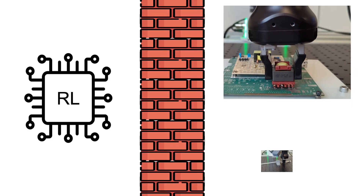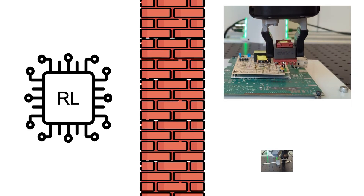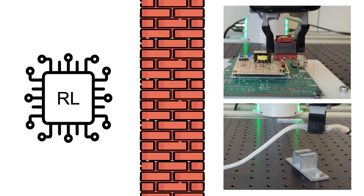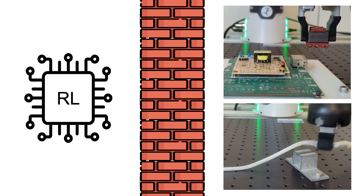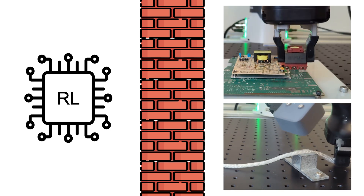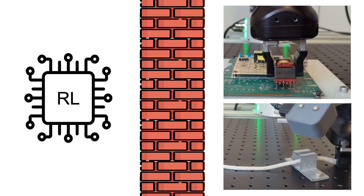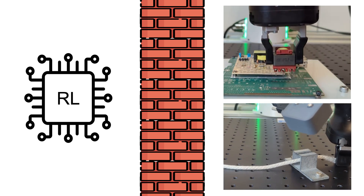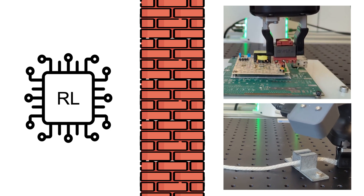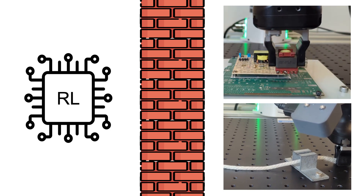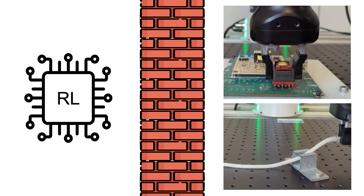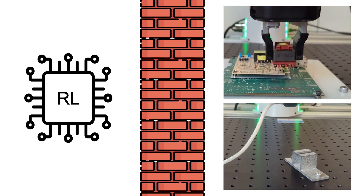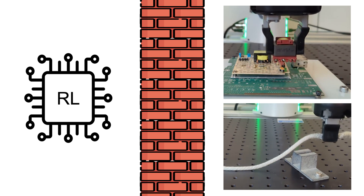Imagine a robot needs to learn to insert a small electrical component into a PCB board, or route a flexible cable through a small clip. To initiate reinforcement learning in the real world, we can break it down into several key ingredients.